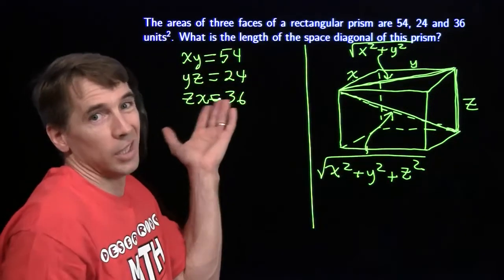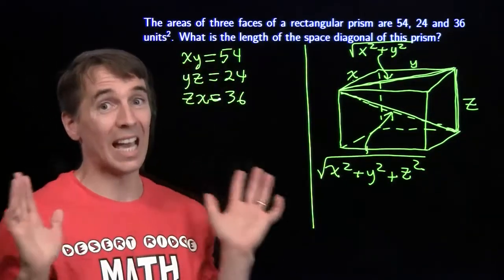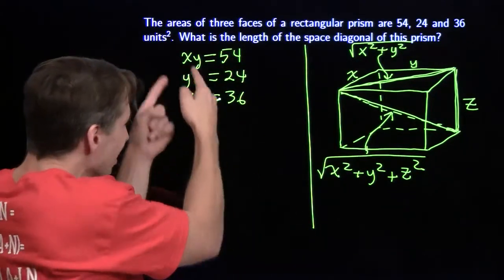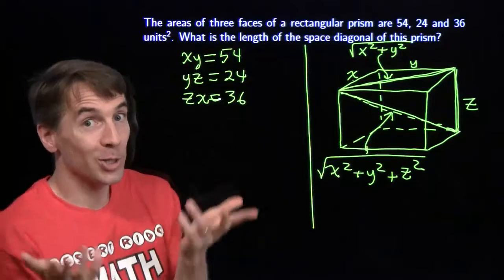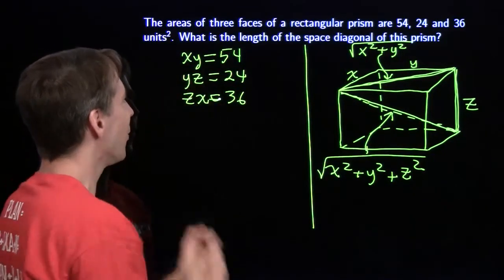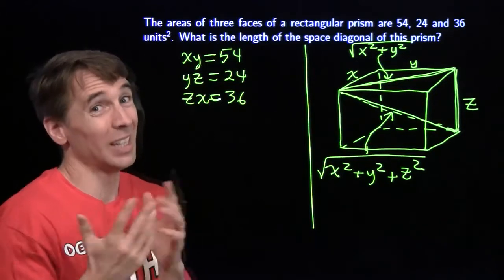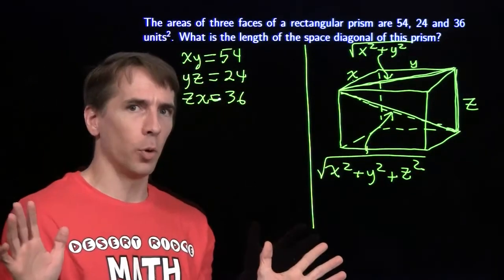Now, we got a little lucky here. We can look at these numbers and just guess the answer. 54 looks like 9 times 6, 24 looks like 6 times 4, and then at the end we have 4 times 9 is 36. So we can guess and check our way to the answer here, but that's not very sporty.